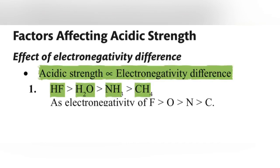First of all, check the electronegativity difference. In this case, the most electronegativity greater is fluorine and second is oxygen, third is nitrogen and last is carbon. As the electronegativity of fluorine is greater, its mean HF is a strong acid.